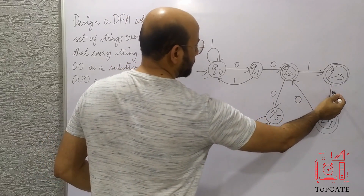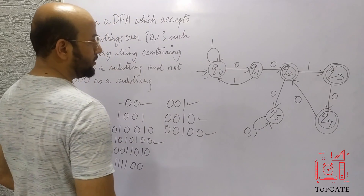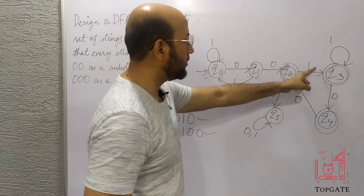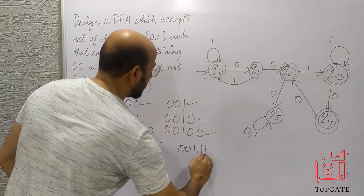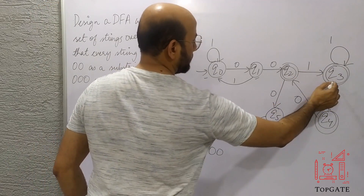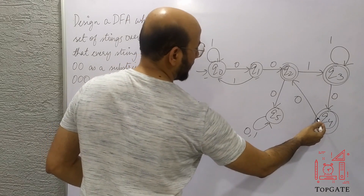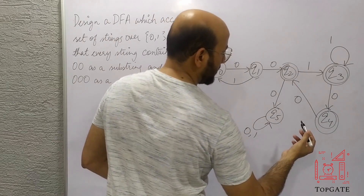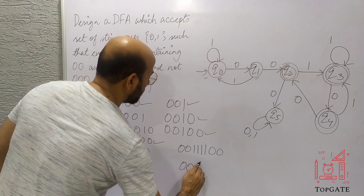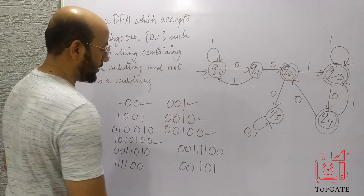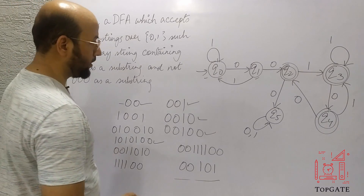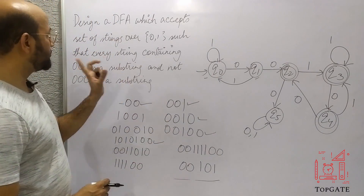At q5 I add a self-loop for both 0 and 1, so anything after triple 0 stays in the dead state and is never accepted. At q3, there is one path for 0 going to q4, and I add a self-loop for 1, so strings like '001111100' are accepted. At q4, there is a path for 0 going to q2, and I connect q4 to q3 on input 1, so '001 01' is also accepted. This is the complete DFA for this language.